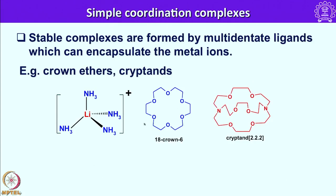In this cyclic ring we have oxygen atoms bridged by ethylene groups. In this case we have 6 oxygen atoms and this is called 18-crown-6. In another case we have two nitrogen atoms flanked by 3 ether groups and this is called a cryptand, named cryptand-[2.2.2]. This essentially represents that between two nitrogen atoms, in each chain we have two oxygen atoms. For example, if one of the linkers has three oxygen atoms, it can be named 2.2.3 or 2.3.2 or 3.2.2.